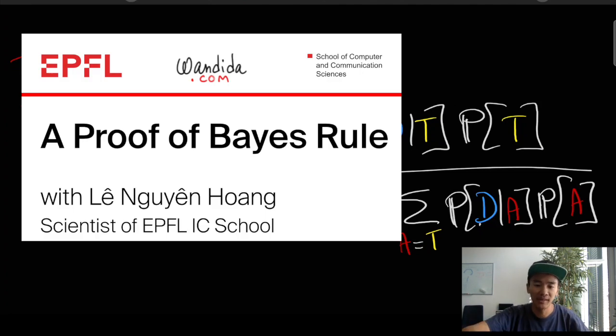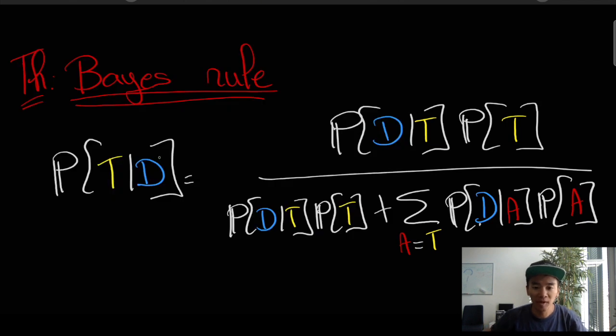In a previous video, we discussed Bayes' theorem and we gave a formal proof of Bayes' theorem. In this video, we're going to dwell on this Bayes' rule and try to understand what the different terms of the equation mean.